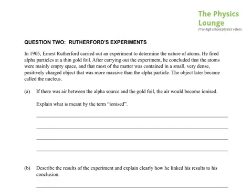Part A. If there was air between the alpha source and the gold foil, the air would become ionized. Explain what is meant by the term ionized. Ionized is becoming an ion. Let's write that. You're causing something to become an ion.